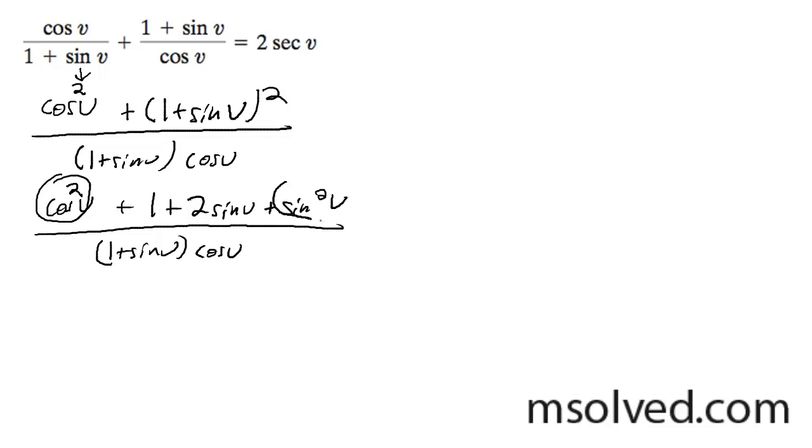So these two become 1 and you end up with 2 plus 2 sine v all over 1 plus sine v times the cosine v. You can factor out a 2 here.